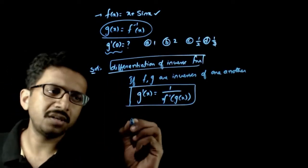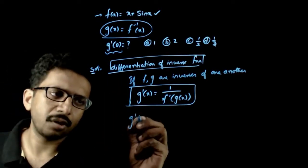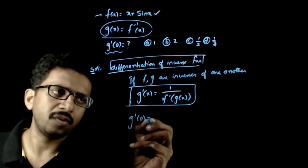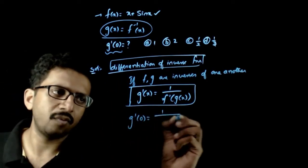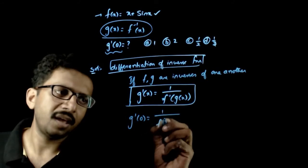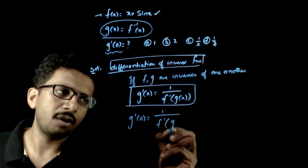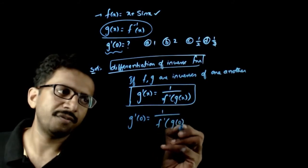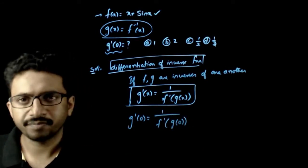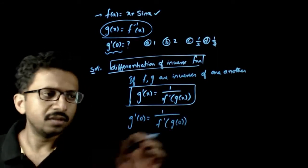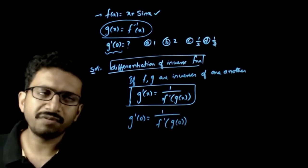Now, g'(0) is nothing but 1 / f'(g(0)). So, what is g(0)?